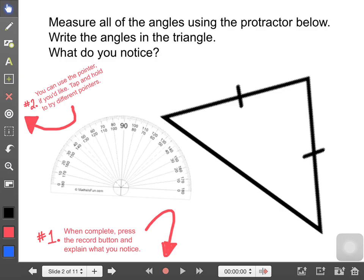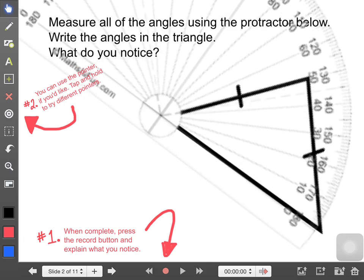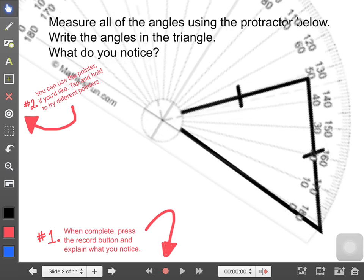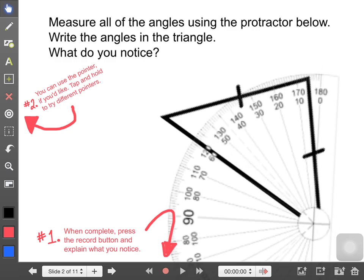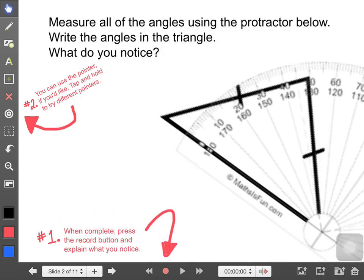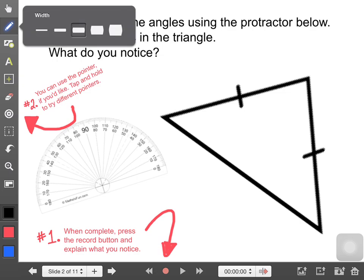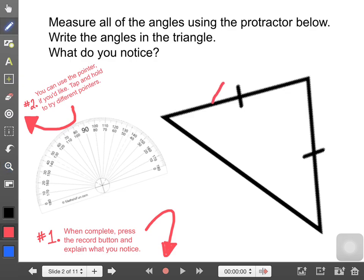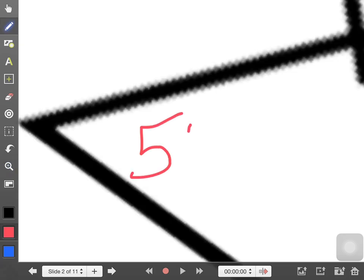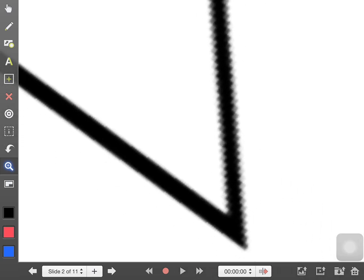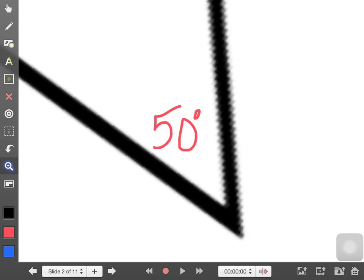In this case, students would take the protractor and hopefully pick up on the fact that both of these angles will give us the same result, which is 50 degrees. Once they figure this out, I want them to indicate what they've found on the screen. So we've got 50 degrees and another 50 degrees, which leaves us with 80 degrees up here.